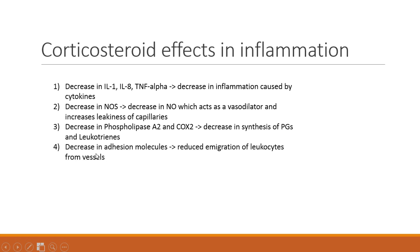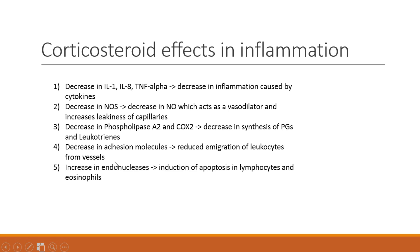Next, we get a decrease in adhesion molecules. When white blood cells travel in the blood, in order to exit the vessels they must roll onto the endothelium and adhere to it. Once adhered, they can translocate into the interstitial fluid through a process called diapedesis. By reducing adhesion molecules expressed on endothelial cells, we reduce immigration of leukocytes from the vessels, decreasing the immune response. Lastly, glucocorticoids increase the expression of endonucleases, which leads to apoptosis of lymphocytes and eosinophils.